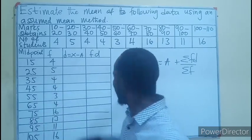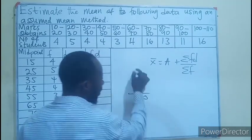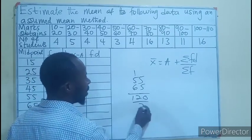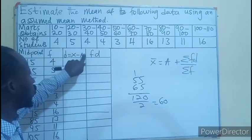So we have 55 and 65. If we add 55 and 65, we have 120 divided by 2, that gives us 60, meaning the assumed mean we are assuming in the data is 60.